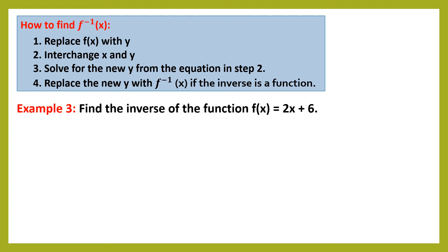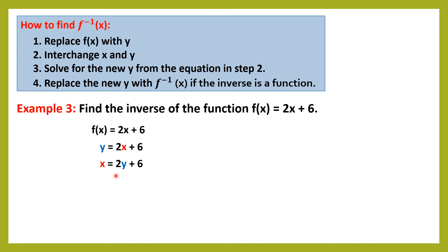For example, find the inverse of the function f of x is equal to 2x plus 6. So let us write first f of x is equal to 2x plus 6. The first step is to replace f of x with y, so we will have y is equal to 2x plus 6. The second step is to interchange x and y, so we will have x is equal to 2y plus 6. Then, in step 3, we solve for the new y. We move the 6 to the other side, so x minus 6 is equal to 2y.